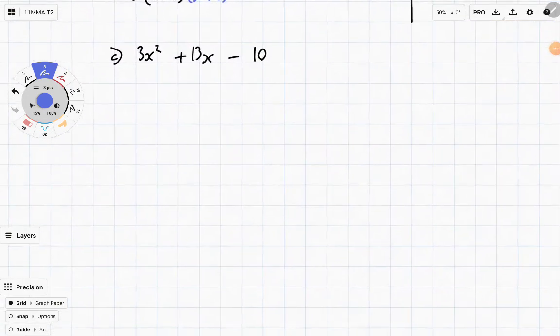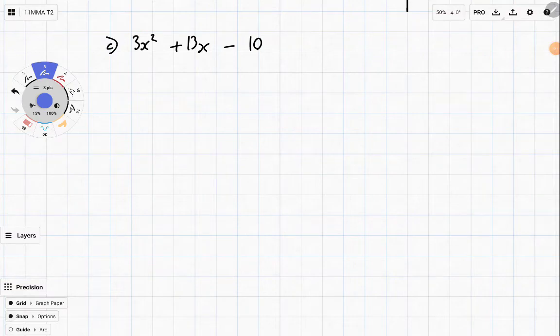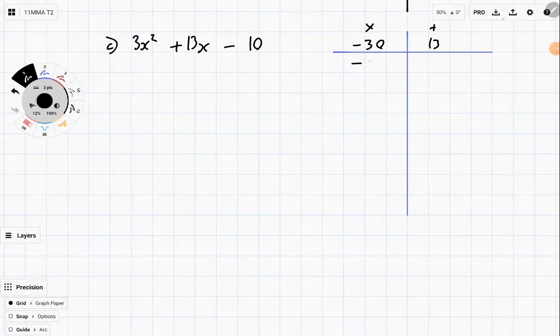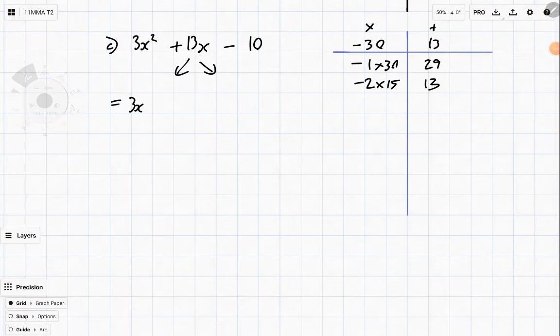We're going to look at one more. Now this one doesn't use any direct apart from the usual parts in the steps. So a in this case is 3, so ac is 3 times negative 10, and b is just 13. So two numbers that multiply to negative 30 and add to 13. Let's have a look at some of the factors. We've got negative 1 times 30, that's 29. Negative 2 times 15, that's 13, done. Don't need to go any further. So once again, this is where decomposition really matters. We're going to split that middle term into two. So 3x squared minus 2x plus 15x minus 10.